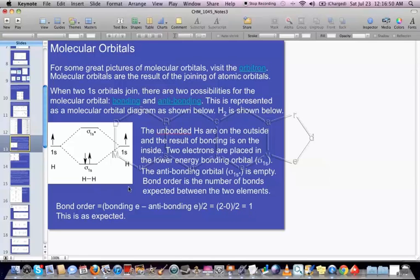And that means we would expect a single bond between the two hydrogen atoms, and that's exactly what we do see when we're talking about H2. Alright, so now you've seen bonding and you've seen anti-bonding.